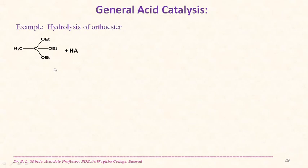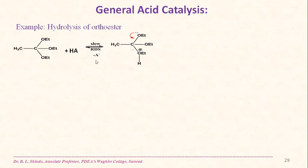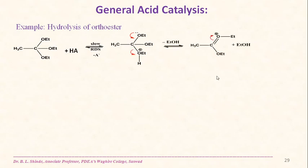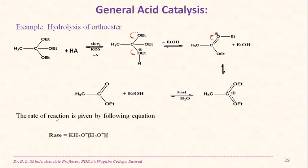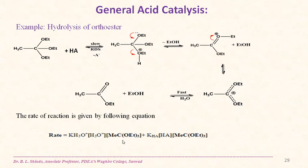An example is the hydrolysis of an orthoester, which can be hydrolyzed by all species capable of donating a proton. In the rate-determining step, ethanol is liberated to give an intermediate, and in the presence of water it gives an ester. The rate of reaction depends on the concentration of all acids contributing: rate = k[H₃O⁺][orthoester] + k[HA][orthoester].